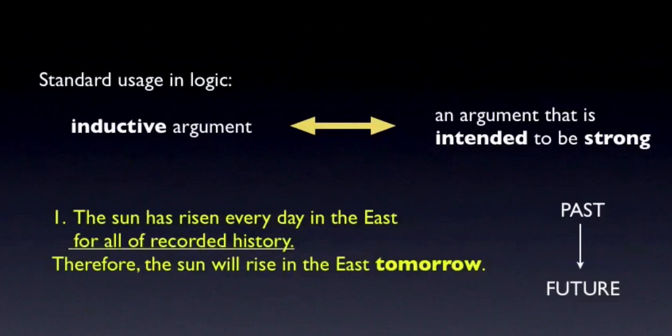So, for example, on the logical definition, a prediction about the future based on past data will count as an inductive argument. The sun has risen every day for as long as the earth has existed, as far as we know, so we expect the sun to rise tomorrow as well. This is an inductive argument on our definition, because we acknowledge that even with this reliable track record, it's still possible for the sun to not rise tomorrow. Aliens, for example, might blow up the earth or the sun overnight.